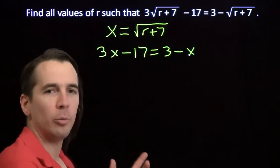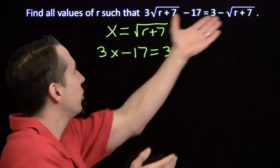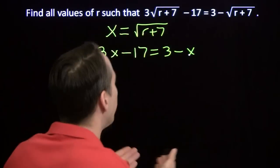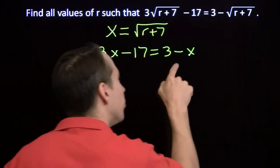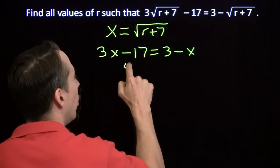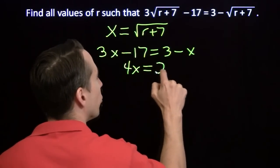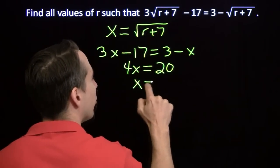We use a nice little substitution here to substitute for the scary stuff. And we turn the scary equation into this harmless little linear equation. We add x to both sides. We add 17 to both sides. We get 4x equals 20. So x equals 5.